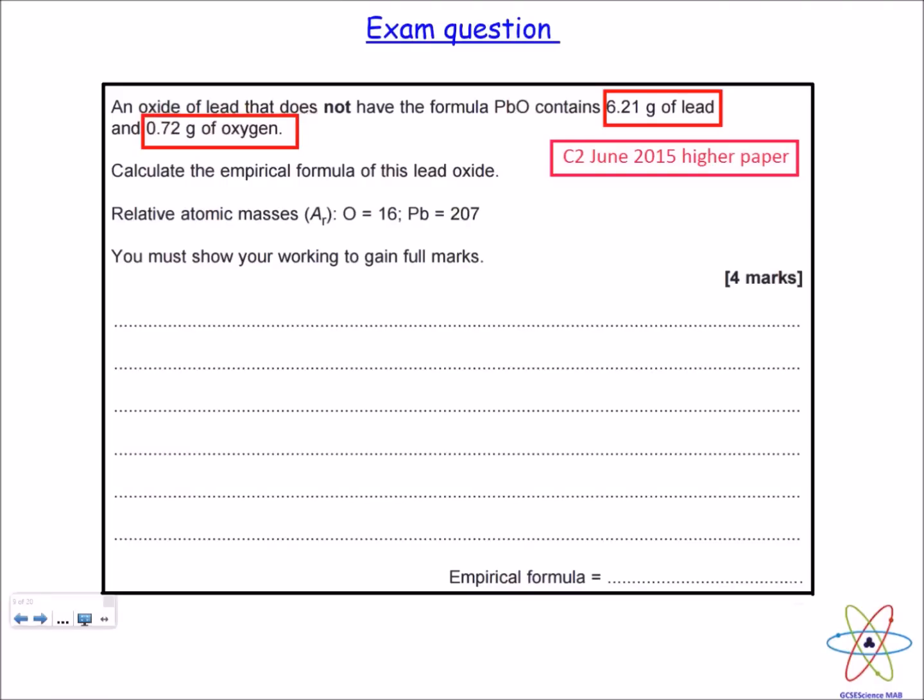So let's have a go at this exam question. This exam question is from the C2 June 2015 higher paper and it reads: an oxide of lead that does not have the formula PbO contains 6.21 grams of lead and 0.72 grams of oxygen. Calculate the empirical formula of this lead oxide. Quite conveniently you've also got the relative atomic masses of oxygen and lead.